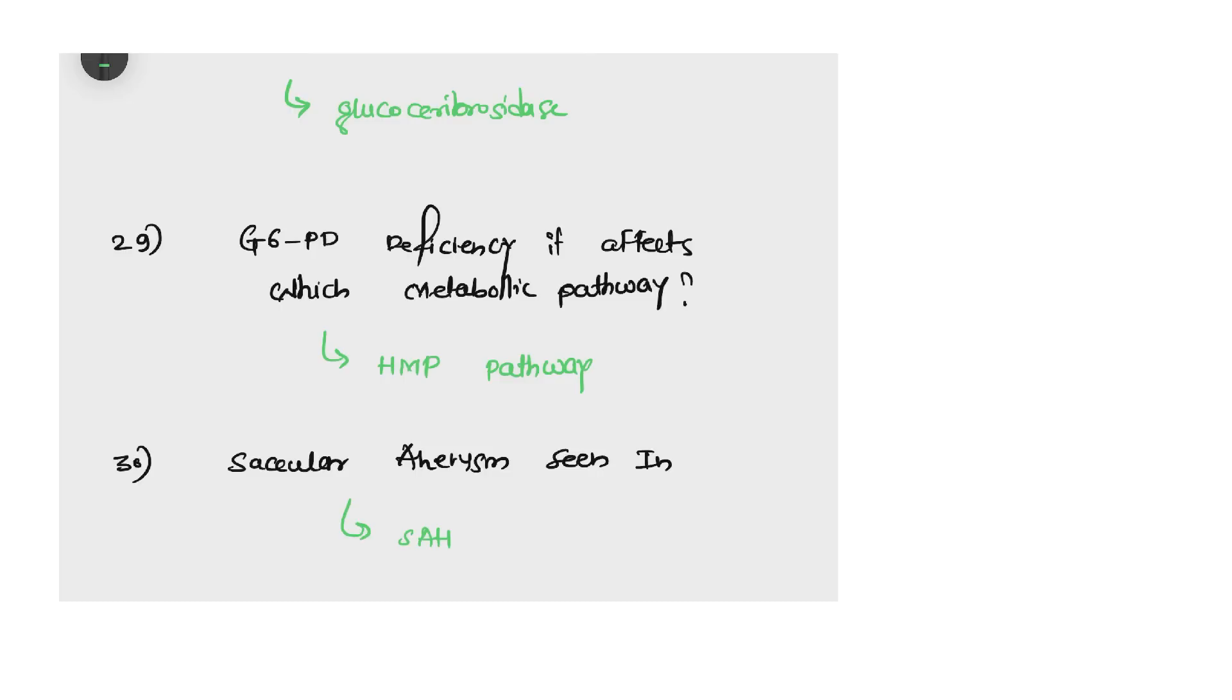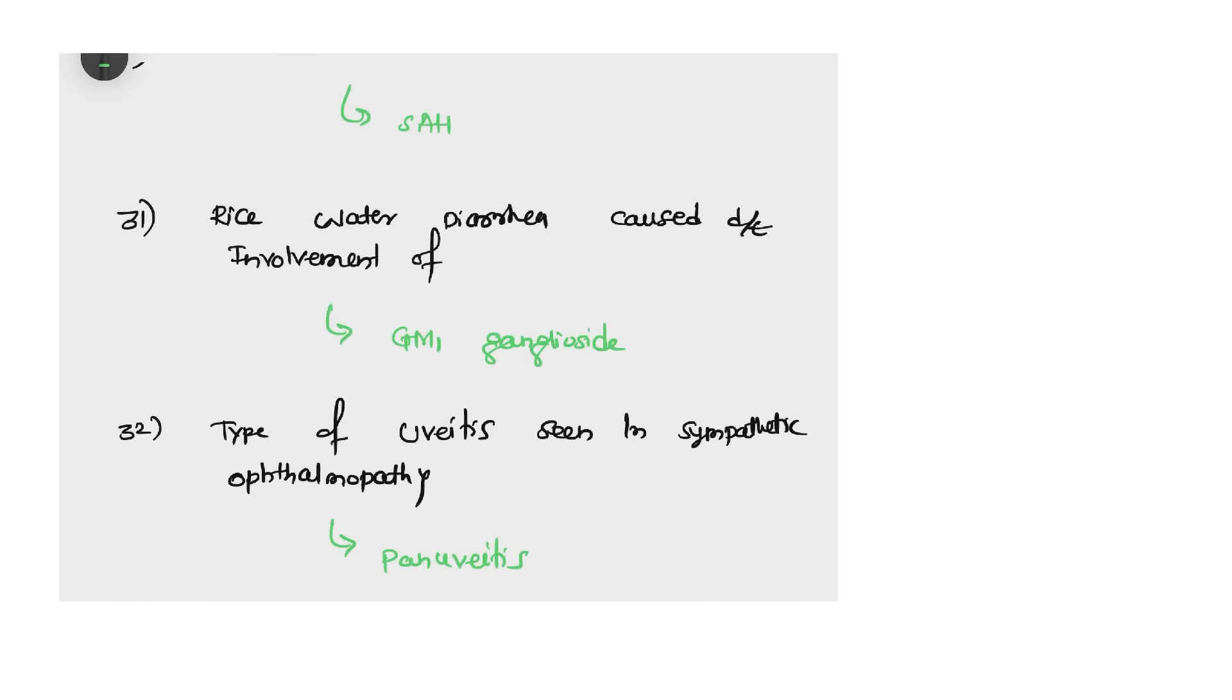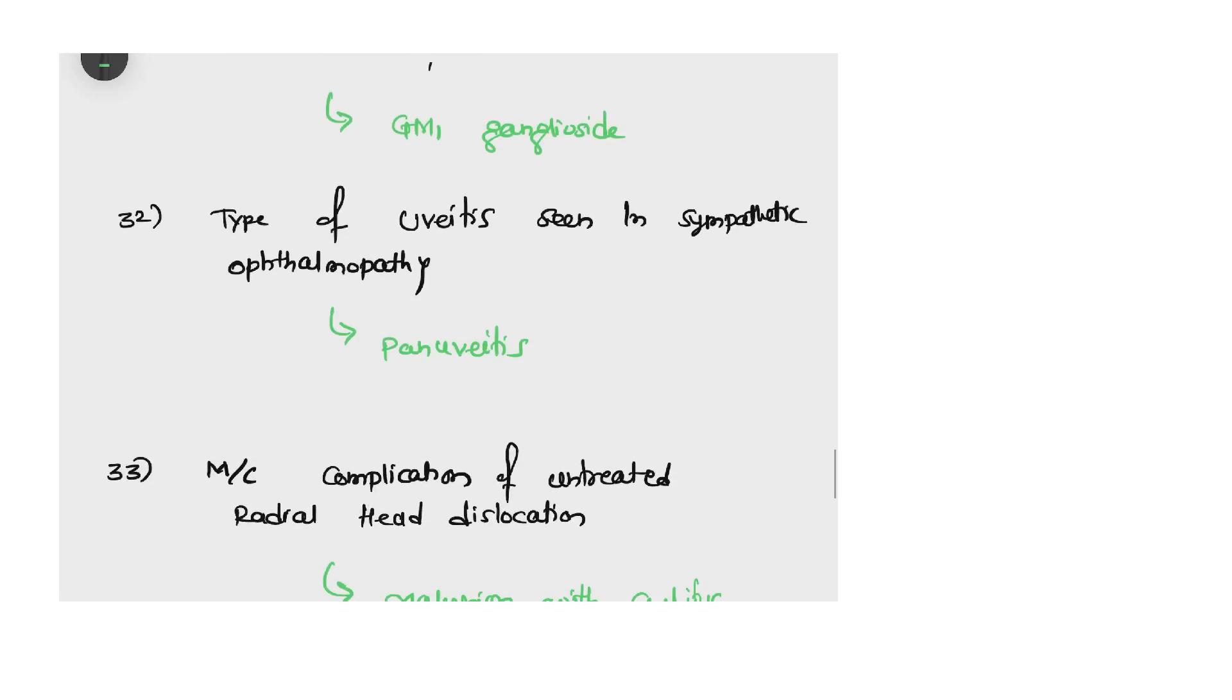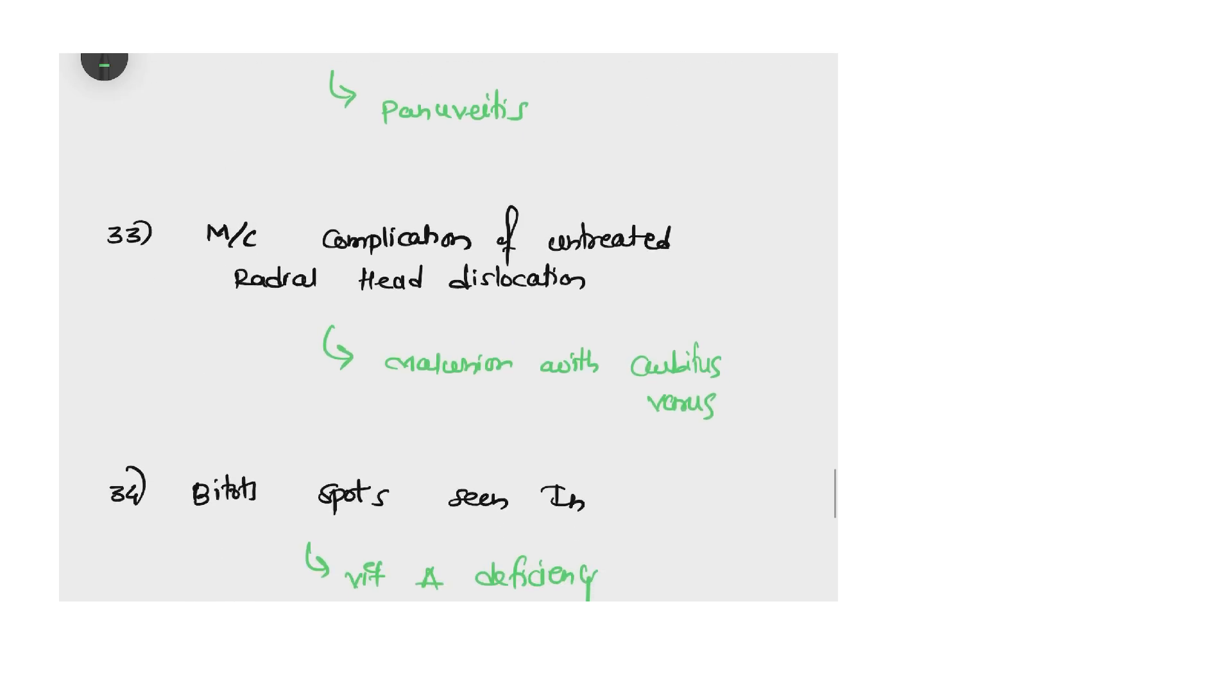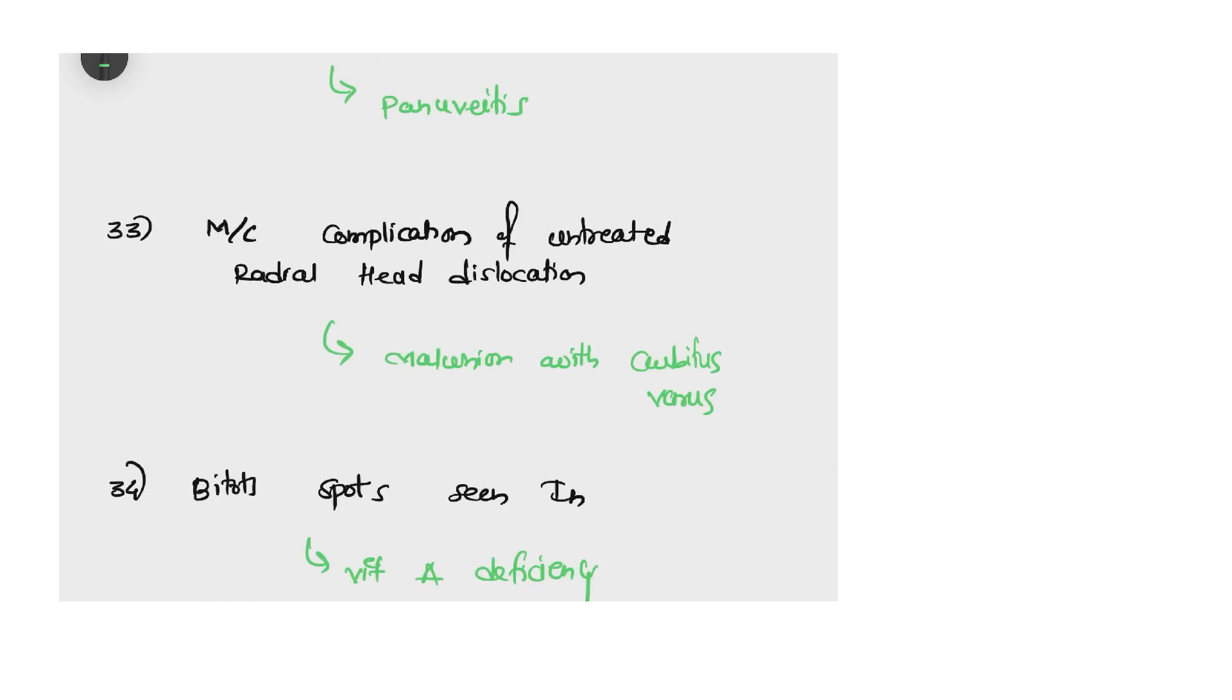Next question: G6PD deficiency affects which metabolic pathway? That is HMP shunt pathway. Saccular aneurysm seen in? Yes, it is seen in subarachnoid hemorrhage. Next question: rice water diarrhea caused due to involvement of? Yes, it is due to involvement of GM1 ganglioside. Type of uveitis seen in sympathetic ophthalmopathy? It is panuveitis.